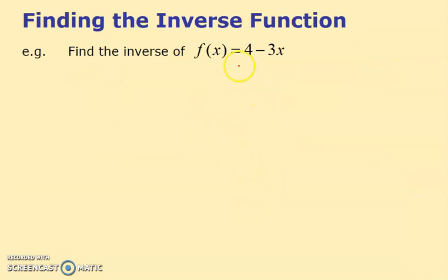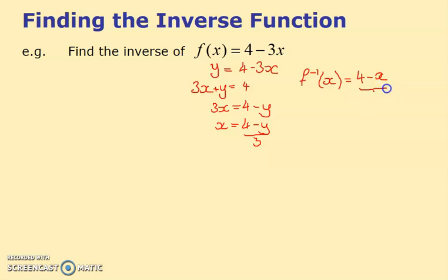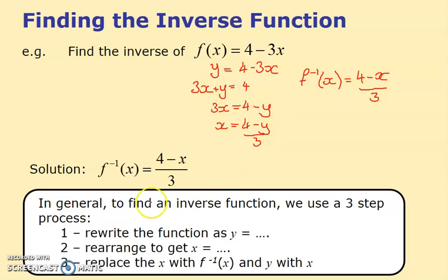Here's the first worked example: f(x) = 4 − 3x. The method: write y = 4 − 3x, then rearrange to make x the subject. Move 3x over: y + 3x = 4, then 3x = 4 − y, so x = (4 − y)/3. The final step is to write this as f⁻¹(x) = (4 − x)/3, replacing y with x.